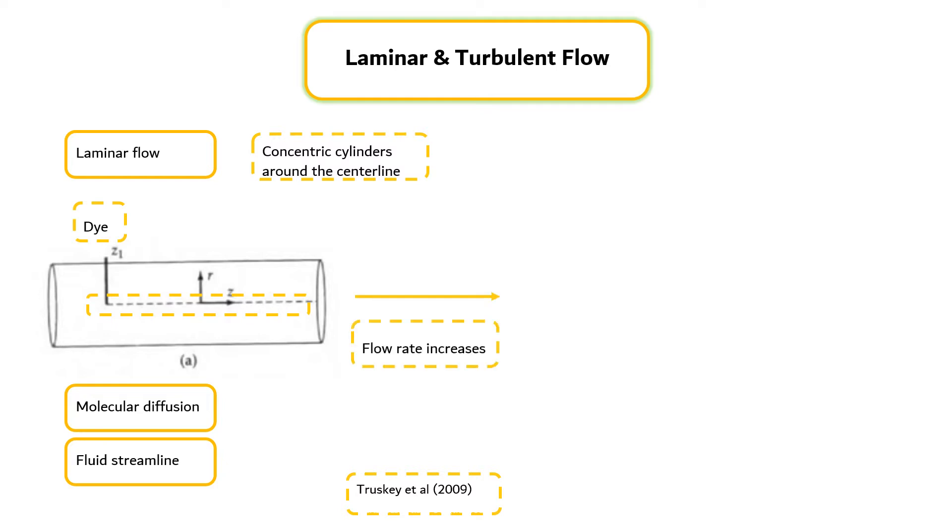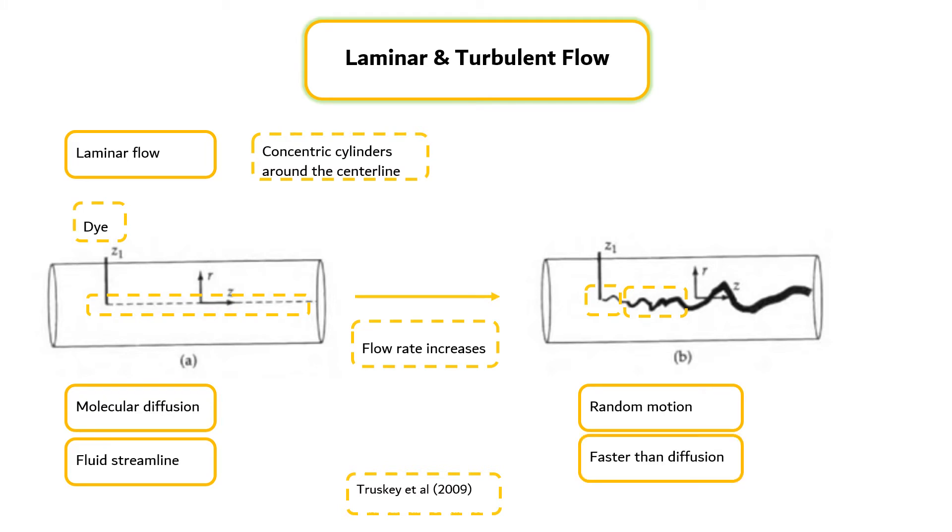Now consider the case in which the flow rate increases. At first, the dye pattern is the same, but at some flow rate, depending on the radius of the cylinder and the properties of the fluid, the fluid patterns undergoes a transition. The motion of the dye in the radial direction becomes more and more random. This movement is much faster than diffusion.